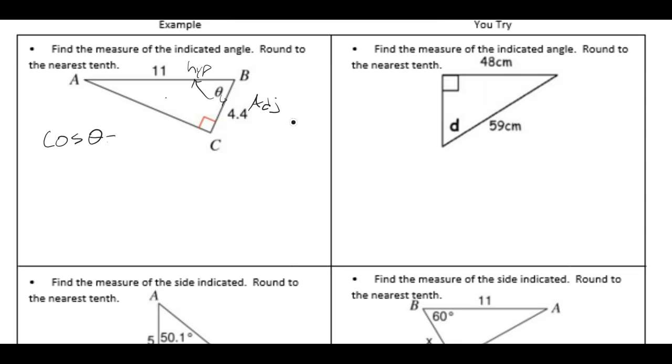Cosine of theta is 4.4 over 11. We now take arc cosine of both sides and get theta equals arc cosine of 4.4 over 11.